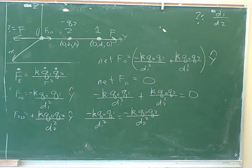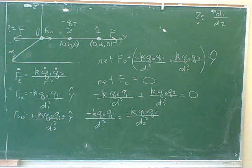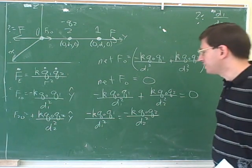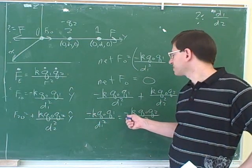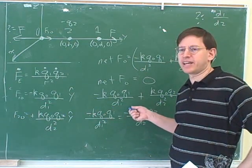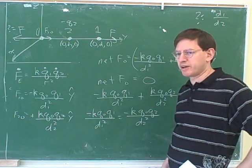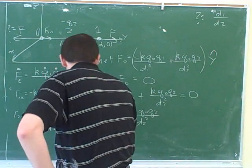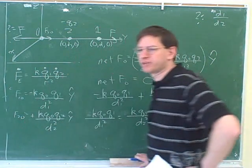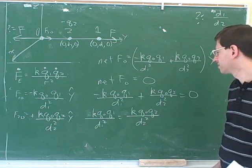Then divide both sides by negative k q0 q1. Notice that there's a negative on the left and a negative on the right, so let's multiply both sides by negative one. Any time you have a negative on both sides, you can get rid of that by multiplying both sides by negative one.